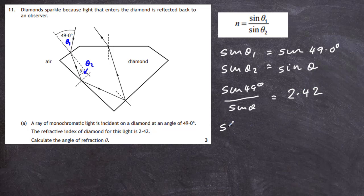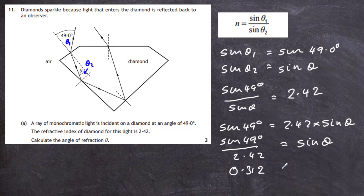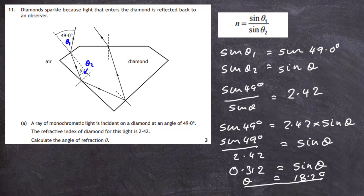Cross-multiplying gives sin 49° equals 2.42 multiplied by sin θ. Dividing both sides by 2.42 gives sin θ equals 0.312. Taking the inverse sine, θ equals 18.2 degrees. So we have found the angle of refraction: 18.2 degrees.